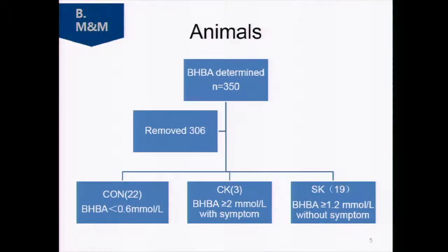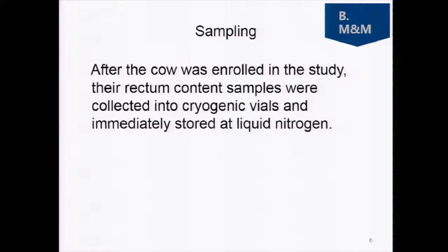Group criteria: CON — BHBA less than 0.6 mmol/L; CK (clinical ketosis) — BHBA greater than or equal to 2 mmol/L with symptoms; SK (subclinical ketosis) — BHBA greater than or equal to 1.2 mmol/L with symptoms. After cows were enrolled, rectal content samples were collected into cryogenic tubes and immediately stored in liquid nitrogen, then sent for analysis.